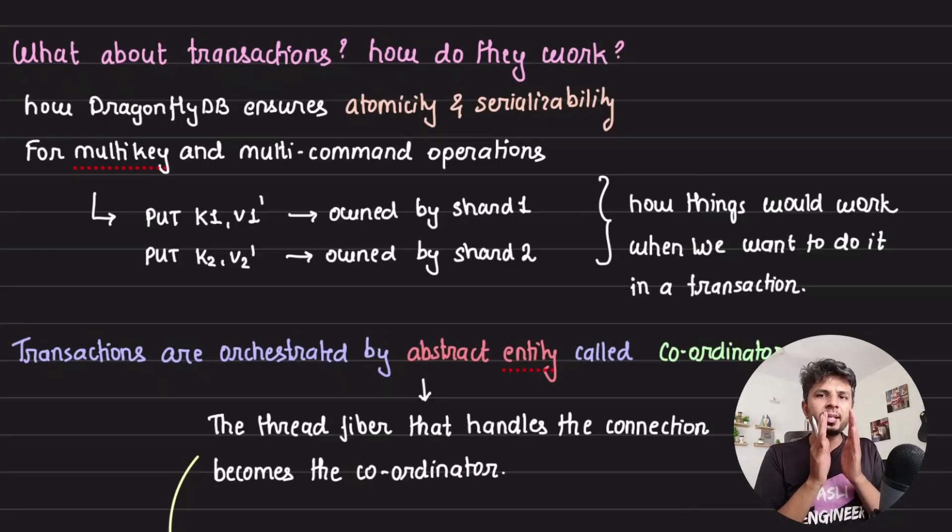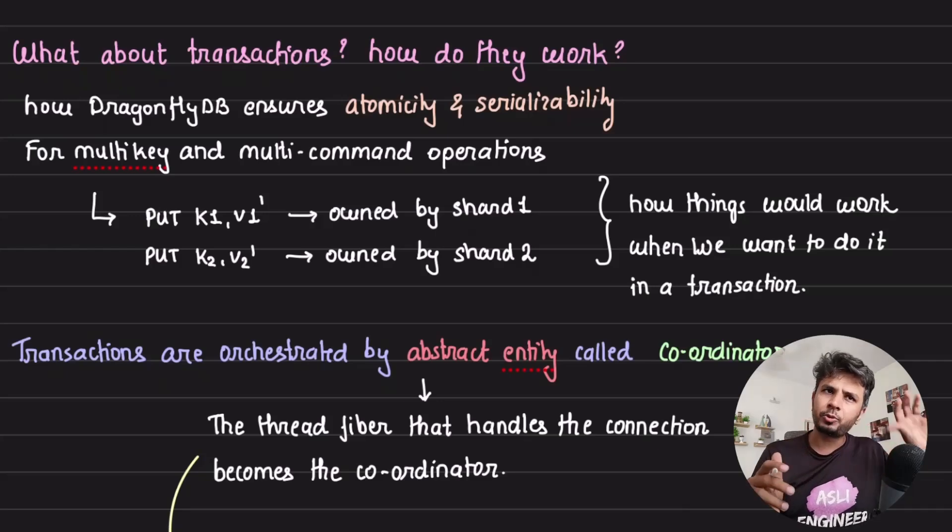When I'm firing two commands in a transaction, let's say PUT K1,V1 and PUT K2,V2, both owned by different shards, we need to ensure that both of these changes are done atomically, which means either both of them are done or none of them are done.